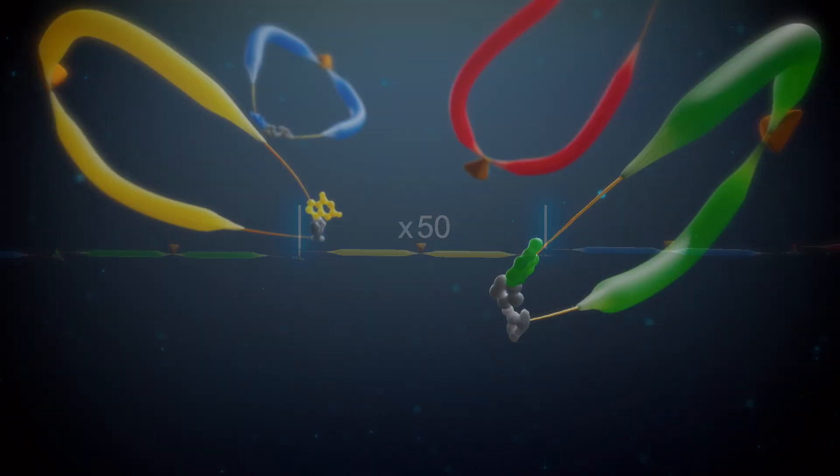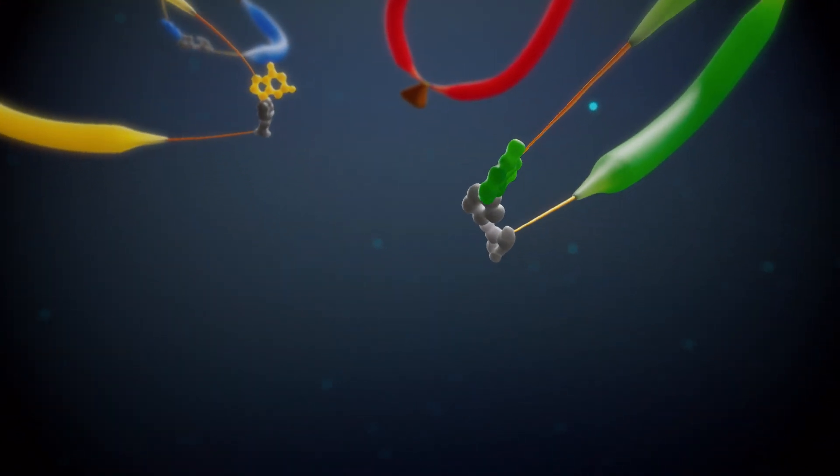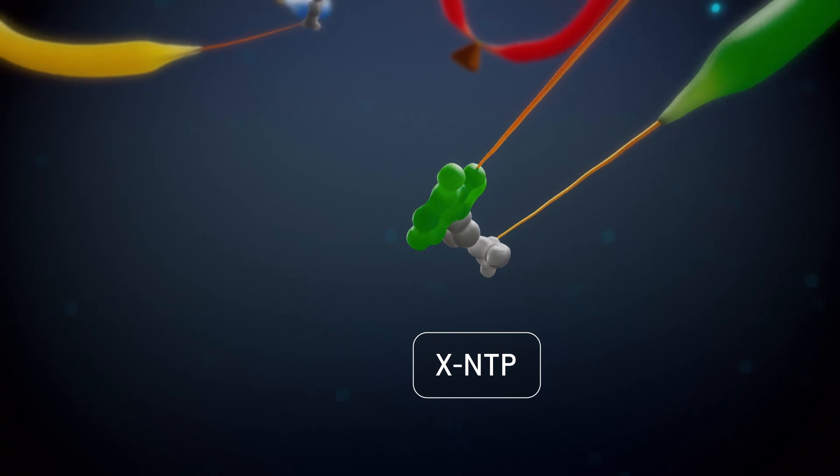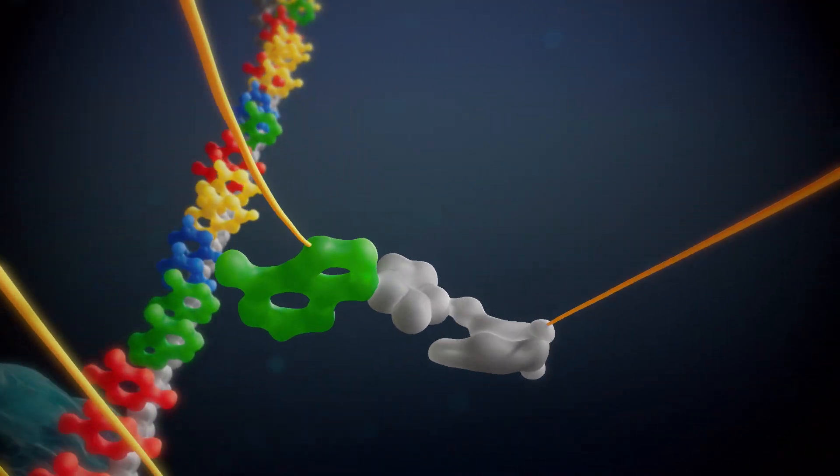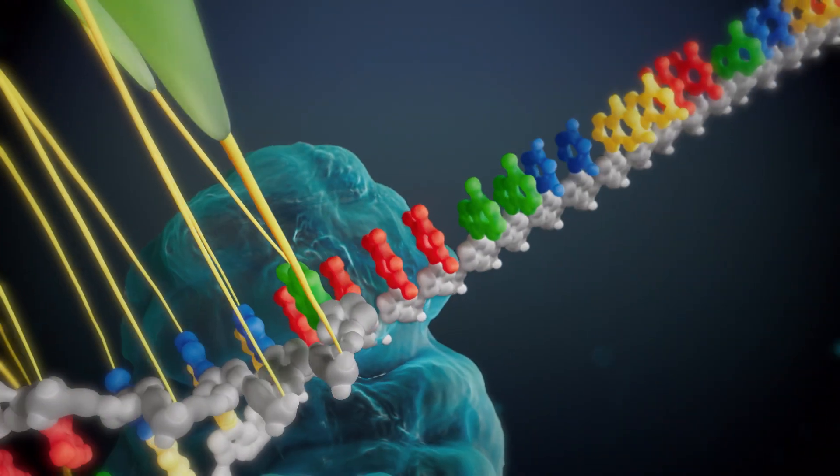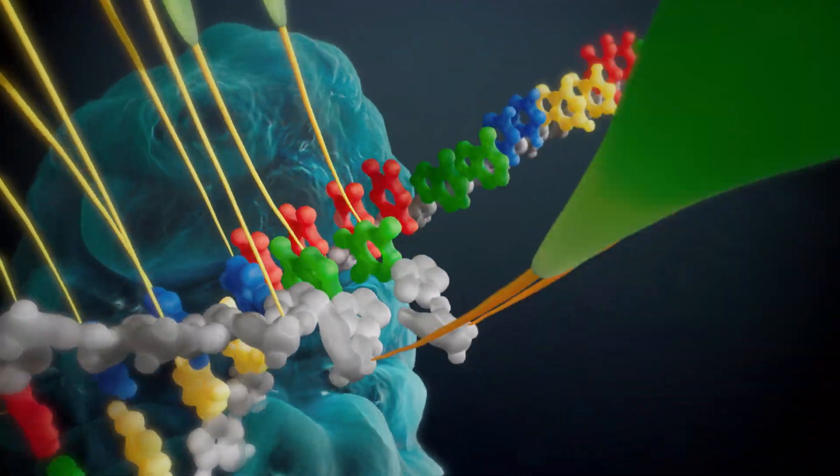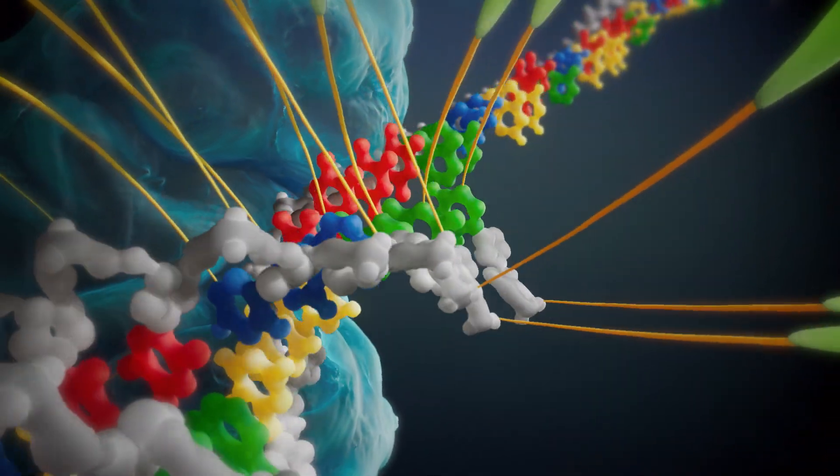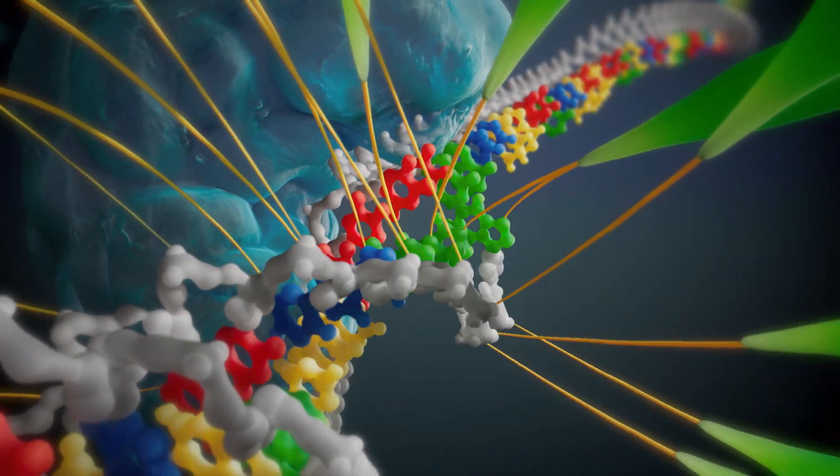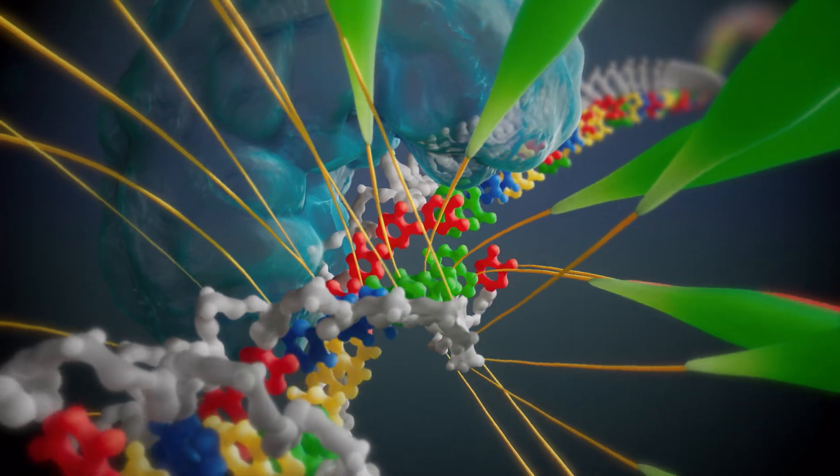The building blocks for the expandomer are novel nucleotides called XNTPs. A modified DNA replication process synthesizes the expandomers by sequentially linking the XNTPs along a target DNA template using a proprietary enzymatic process.